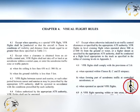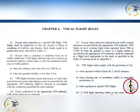Now let us look at the visual flight rules themselves. They are contained in Chapter 4 of ICAO Annex 2. Here is the actual page from Annex 2 on which the VFR rules are contained. If referring to the visual flight rules for operational purposes or before taking an examination, make sure that you consult the latest edition of Annex 2.